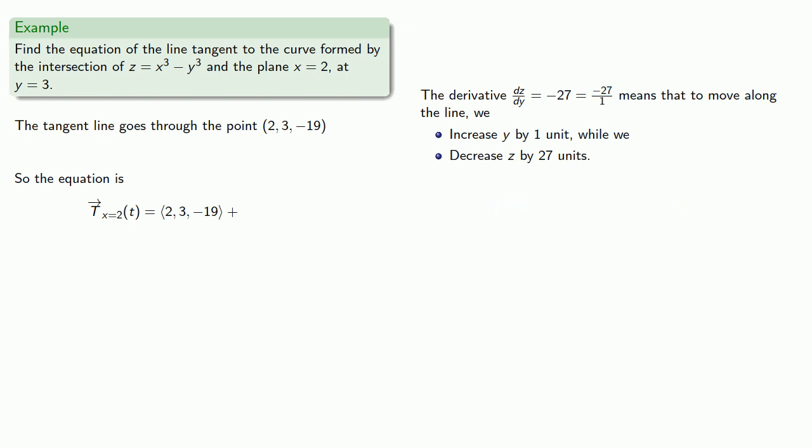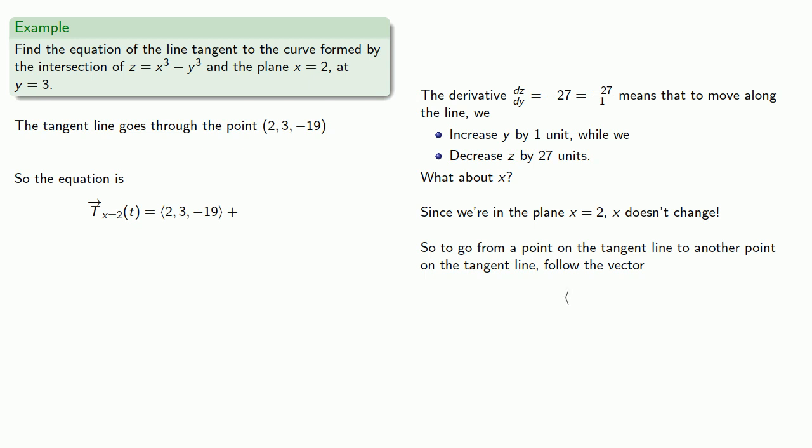Again, we're in three-dimensional space, so we know what happens to y and to z. What about x? And again, it's useful to remember, since we're in the plane x equals two, x is always equal to two, and so x doesn't change at all. And so to go from a point on the tangent line to another point on the tangent line, we'll follow along the vector, don't change x, increase y by 1, decrease z by 27 units, and so our tangent line goes in the direction 0, 1, negative 27, and we can go any scalar multiple of that direction vector.